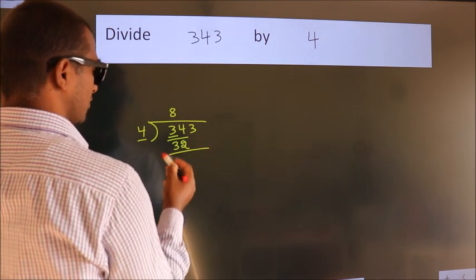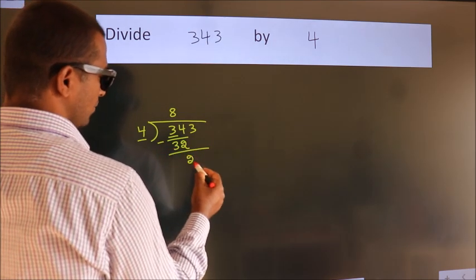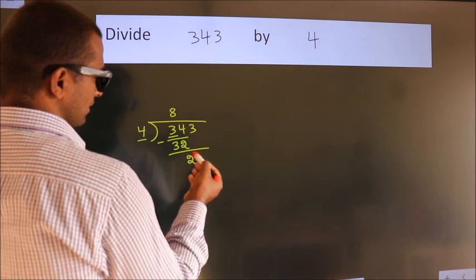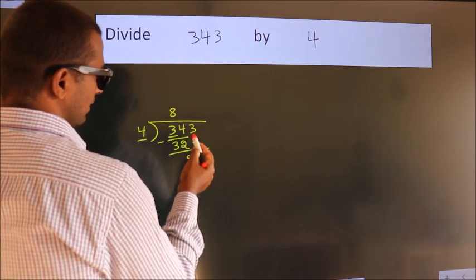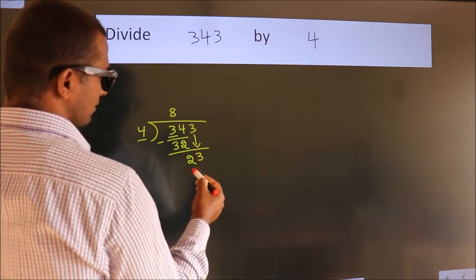Now, we should subtract. We get 2. After this, bring down the beside number. So, 3 down. So, 23.